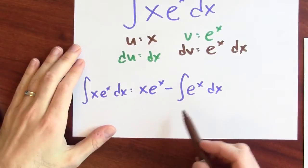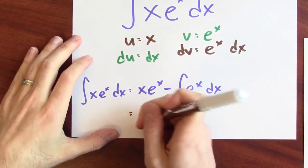which is just dx. But I know how to integrate e to the x. This anti-derivative of e to the x is just itself.